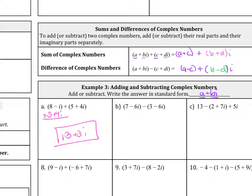Now for letter B, we have 7 minus 6i and minus 3 minus 6i. So just distribute the negative. So that becomes a negative 3 and the negative times negative is a positive 6i. So we'll combine these. 7 minus 3 is 4 and then negative 6i plus 6i is 0. So therefore, our answer is 4.